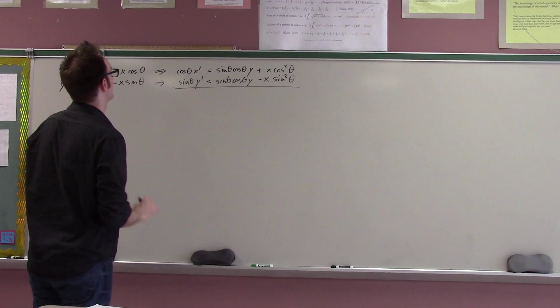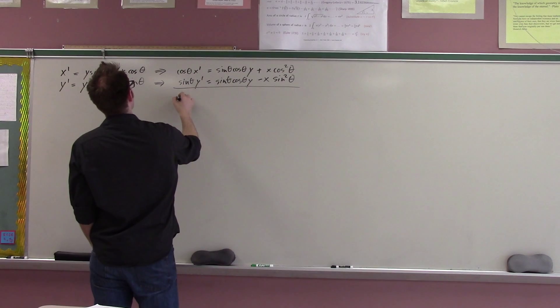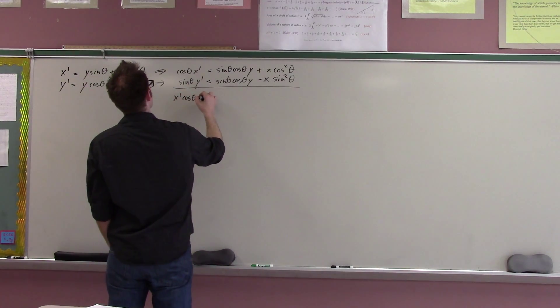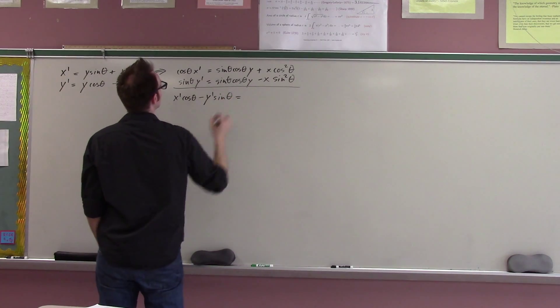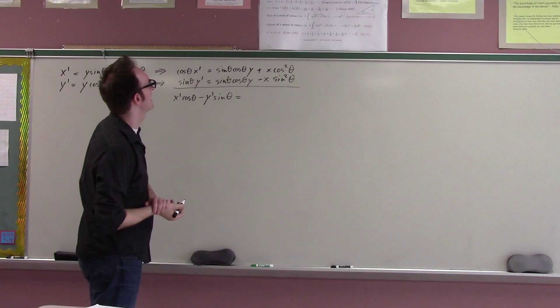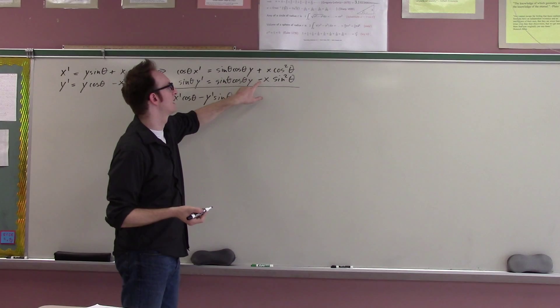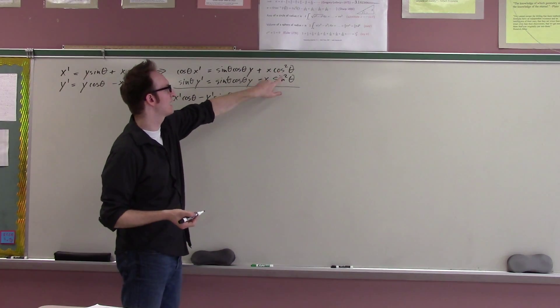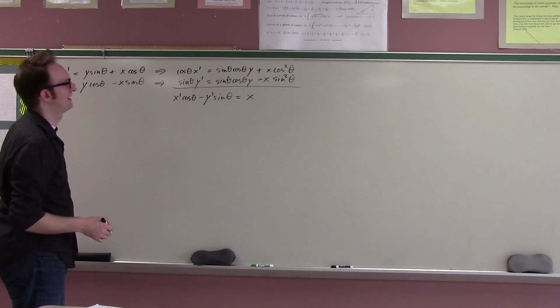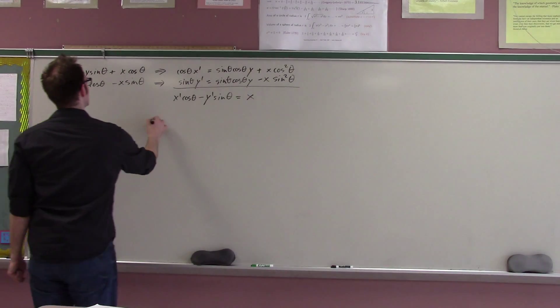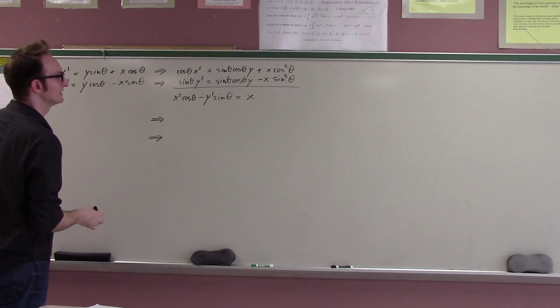And if I do that, I get x prime cosine theta minus y prime sine theta equals, those die, and now we get, okay, well, actually, look what we get, right? We get x cosine squared, minus negative, as in plus, sine squared. So, this is actually just x. Okay, so this is kind of easy.